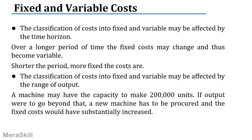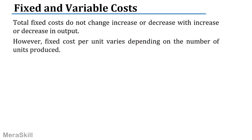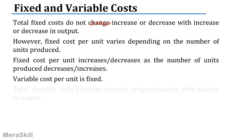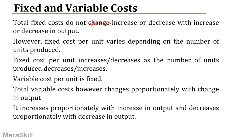A machine may have the capacity to make 200,000 units. If you want to go beyond that, you have to get a new machine, and therefore your fixed costs suddenly jump and increase substantially. Total fixed costs do not increase or decrease with output, but fixed cost per unit varies — it increases as the number of units produced decreases. Variable cost per unit is fixed, but total variable cost changes proportionately and directly with the change in output.